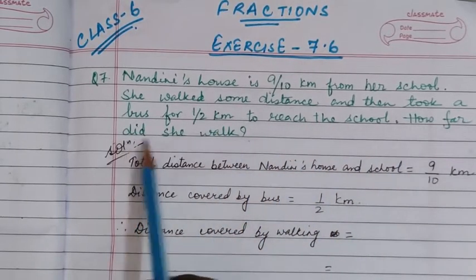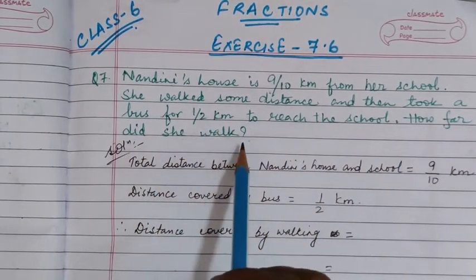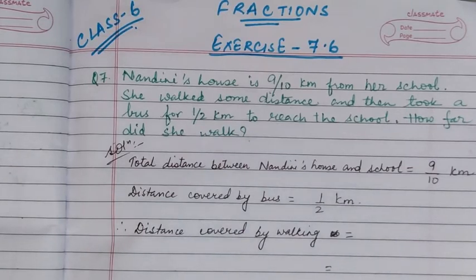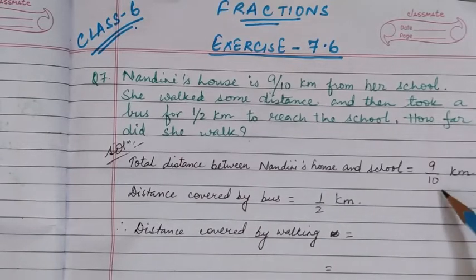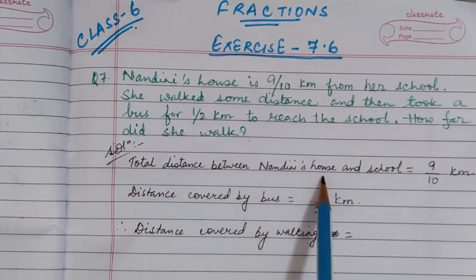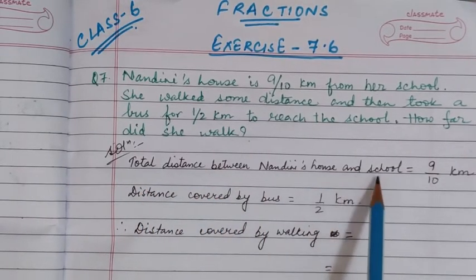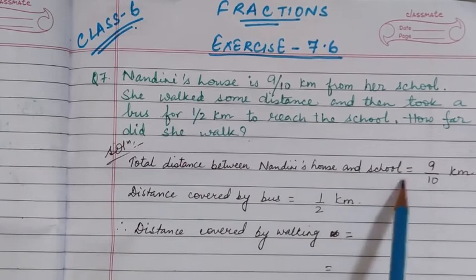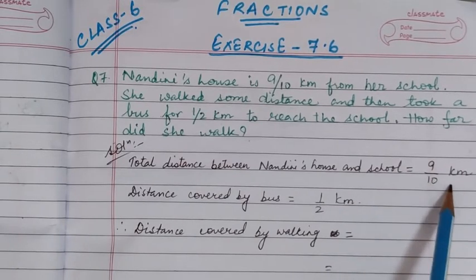How far did she walk? Here in this question, the distance between her house and her school is 9/10. So first of all you will write the statement: total distance between Nandini's house and school is equal to 9/10 km.